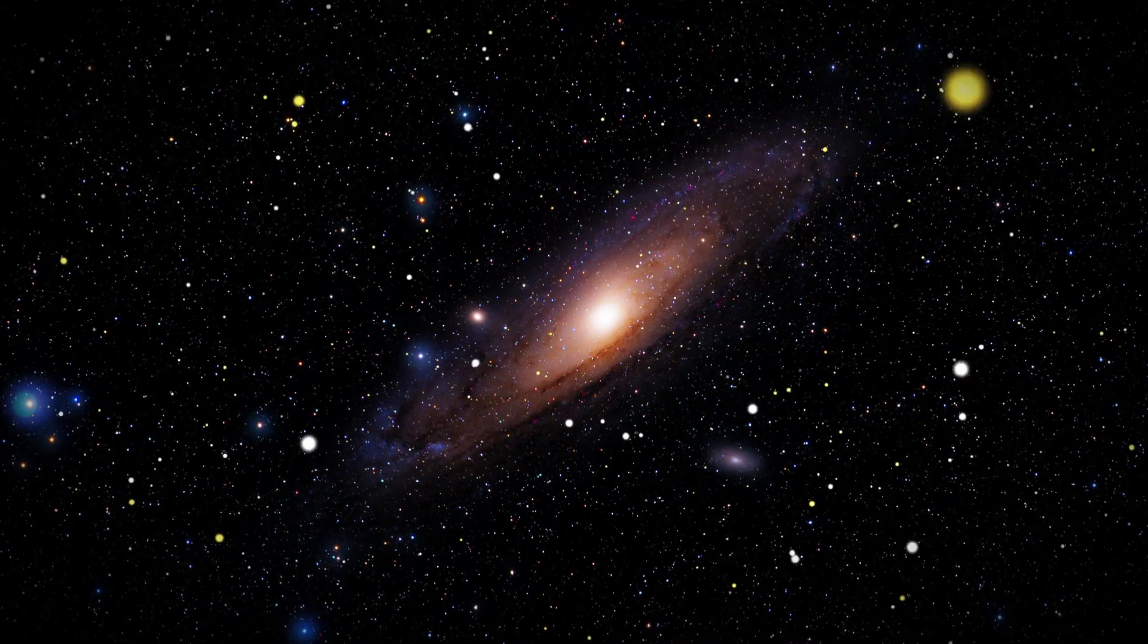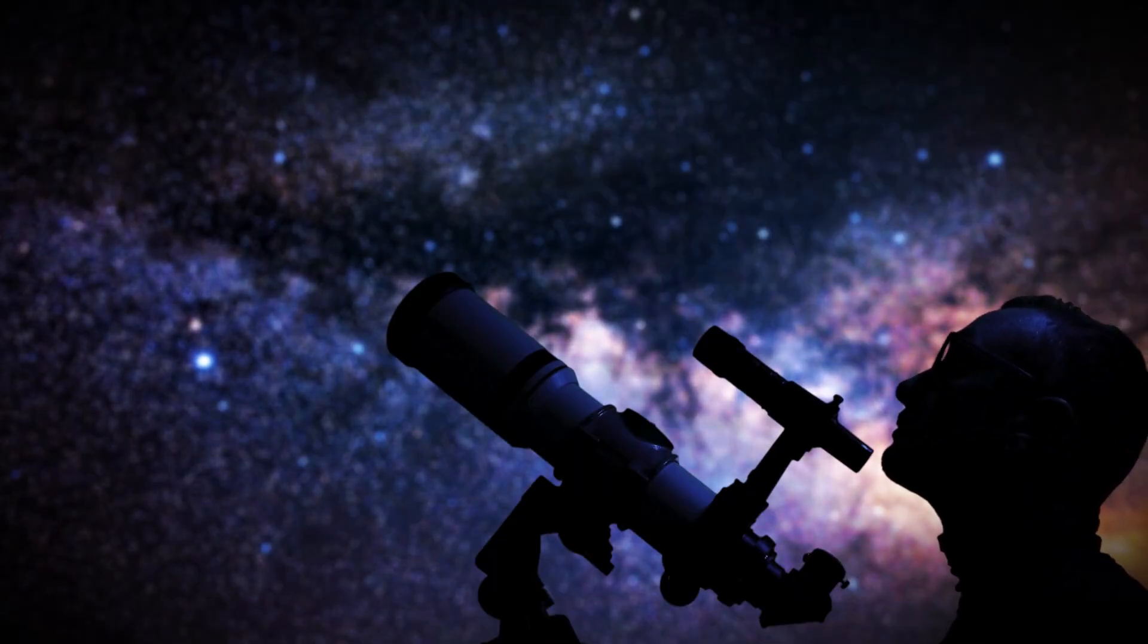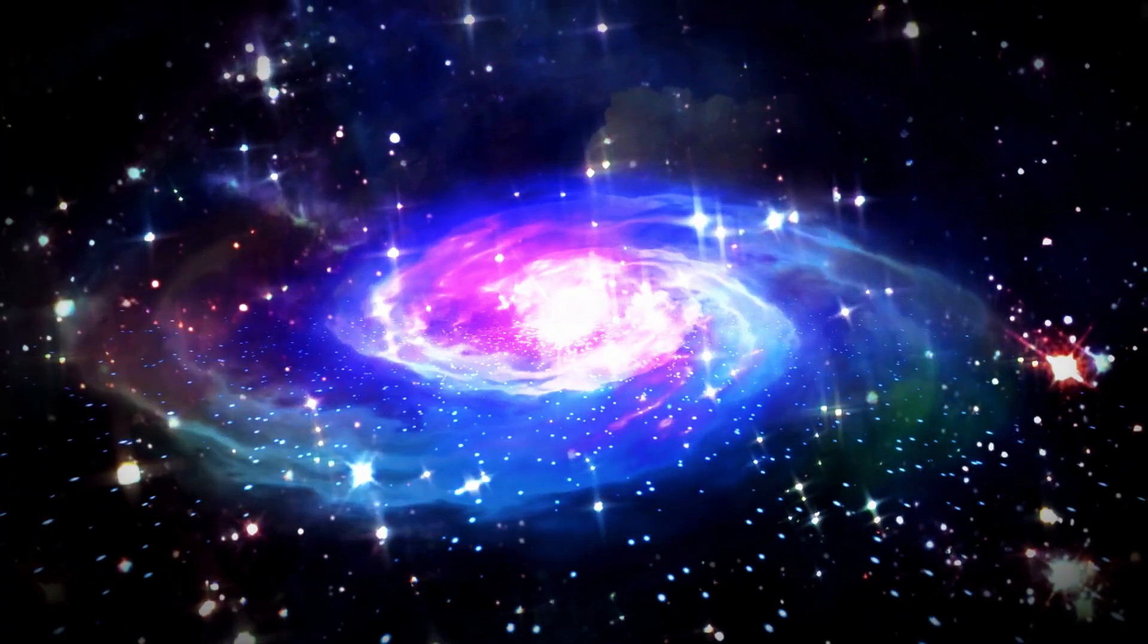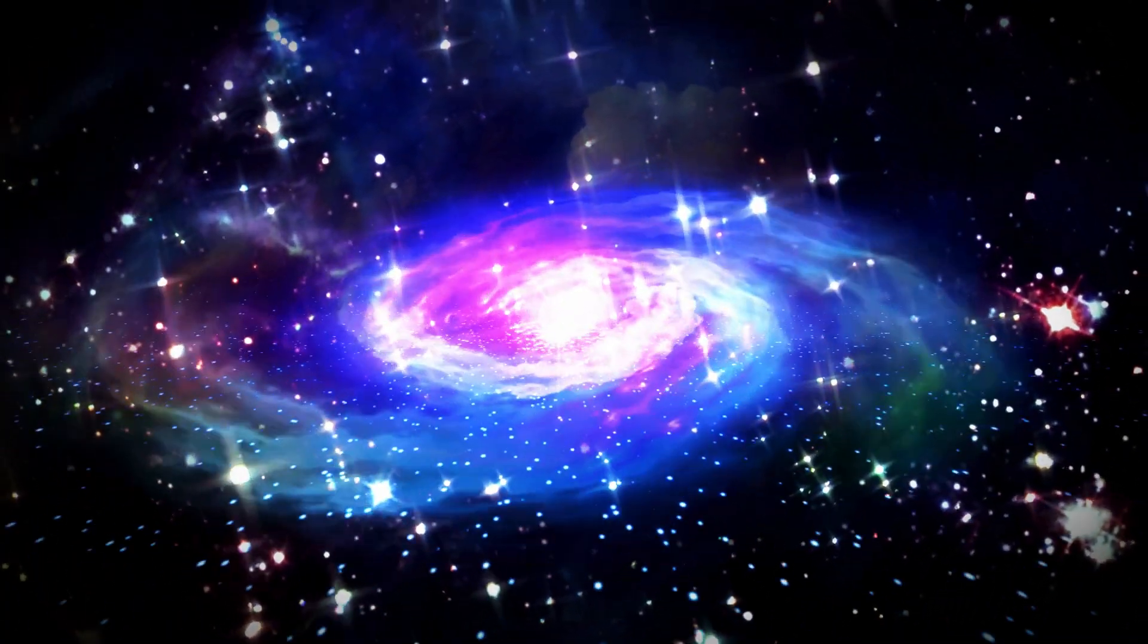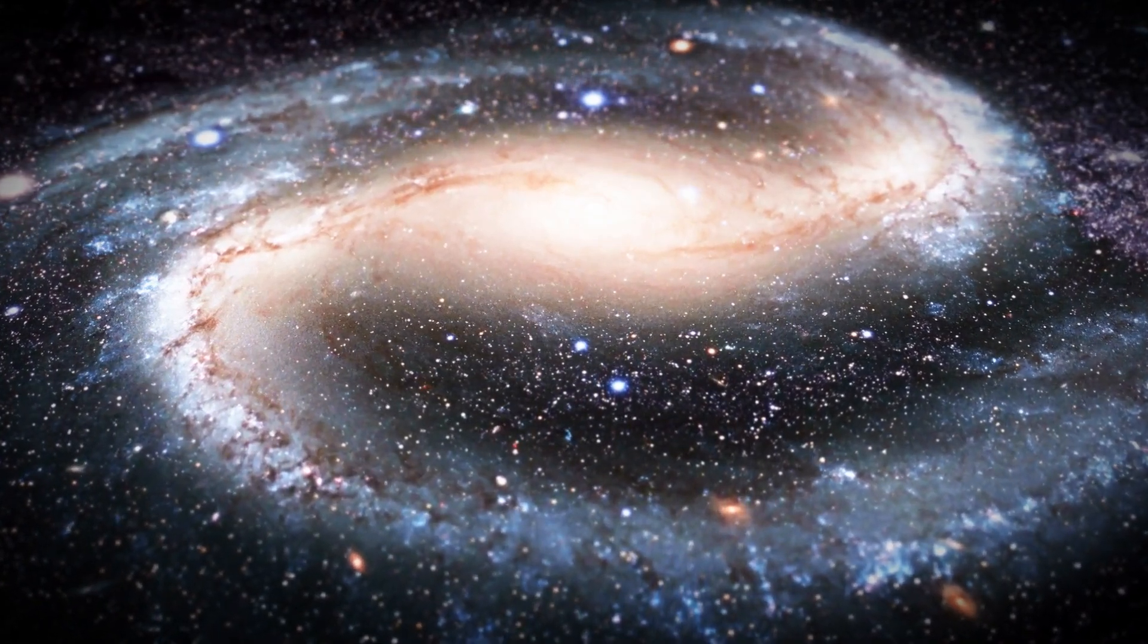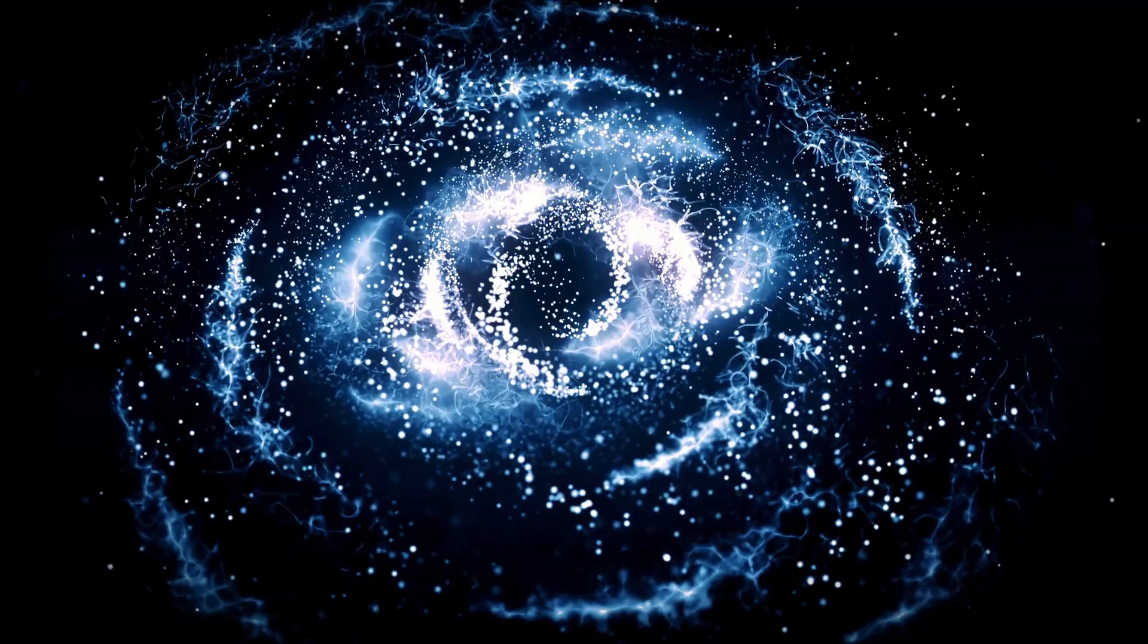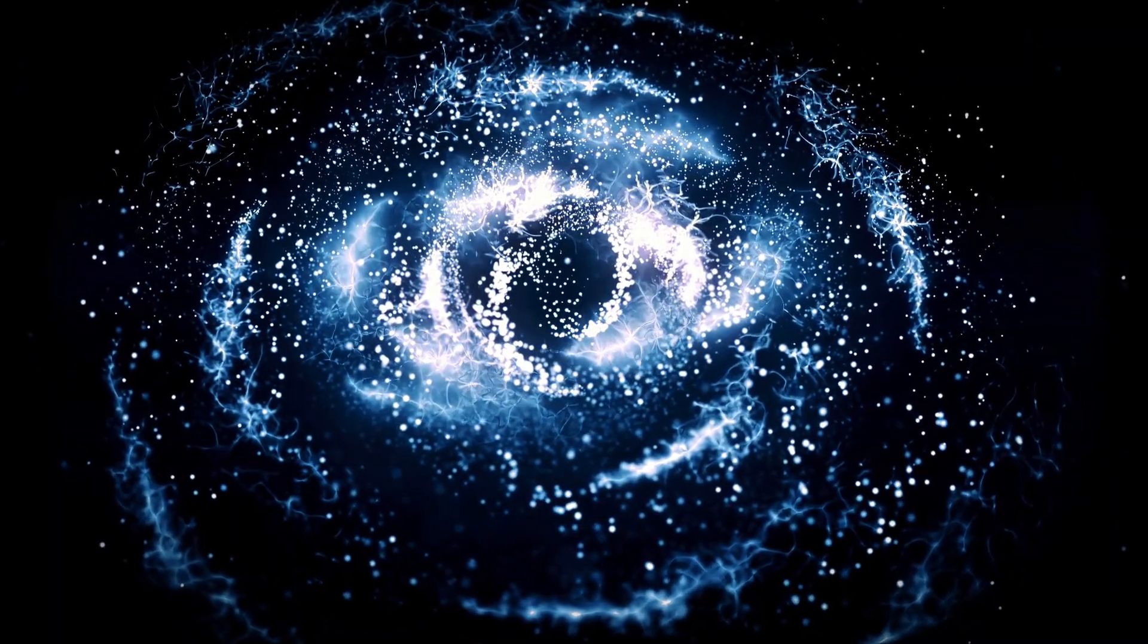Not all galaxies are created equal. Astronomers generally classify them into three main categories: elliptical, irregular, and spiral galaxies. Among these, spiral galaxies dominate the cosmos, accounting for about 70% of all known galactic structures. Our own Milky Way is a prime example of this type.